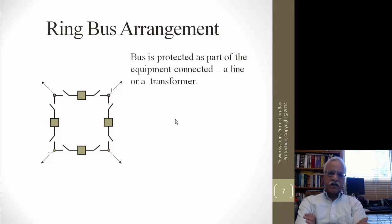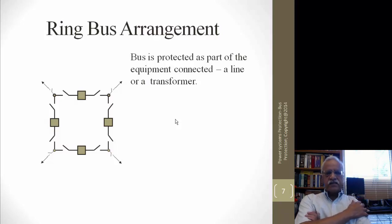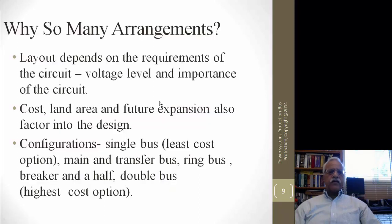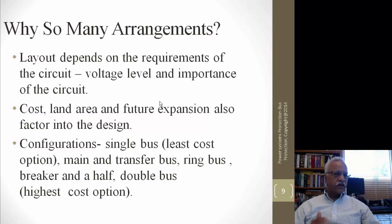The ring bus arrangement is another option. If you have four elements at a bus, you can connect them in a ring bus to achieve improved reliability compared to a single bus. In such conditions, the bus work becomes part of the protected equipment. The breaker-and-a-half scheme is just like a double breaker, except one breaker is shared between two elements — so it is called breaker-and-a-half. The common breaker can be used for both line one and line two.